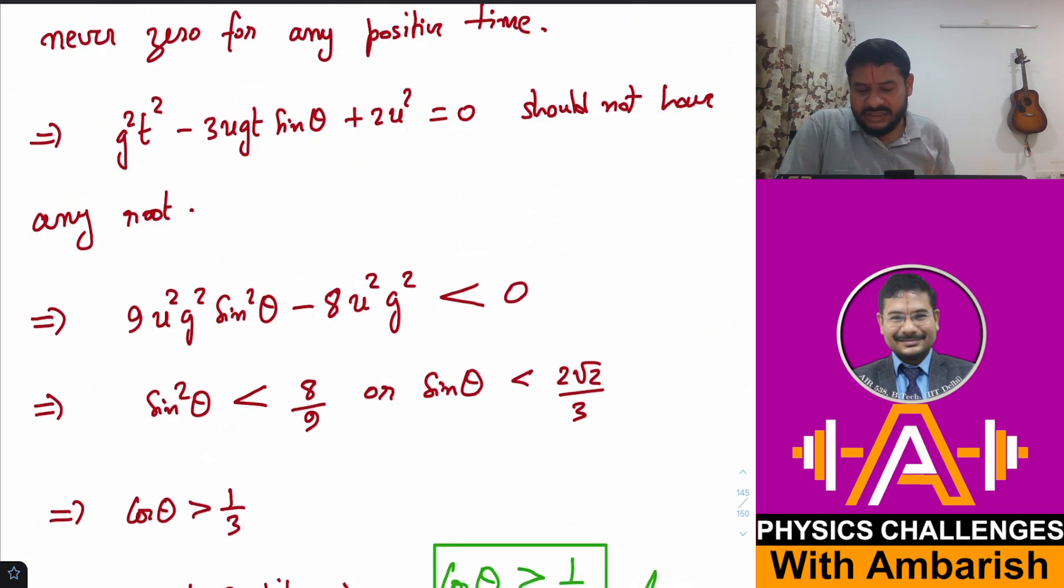Therefore this equation g²t² - 3ug sin θ t + 2u² = 0 should not have any root, and therefore its discriminant should be less than zero. The discriminant is (3ug sin θ)² - 4(g²)(2u²) < 0, which gives 9u²g² sin²θ - 8u²g² < 0. This gives sin²θ < 8/9, and since we're looking for acute θ, we just take the square root: sin θ < 2√2/3.